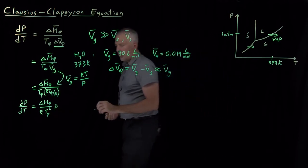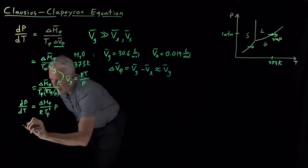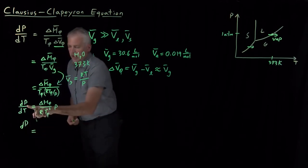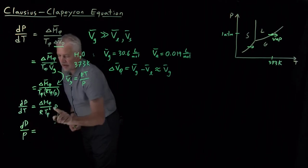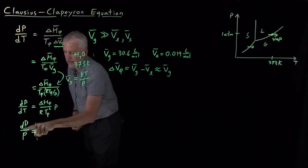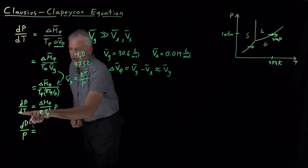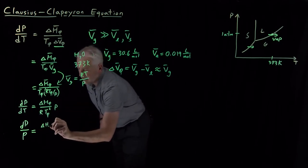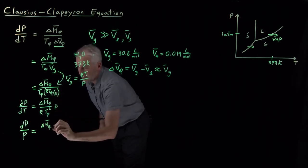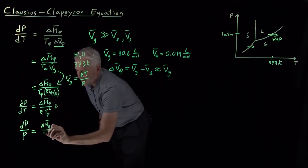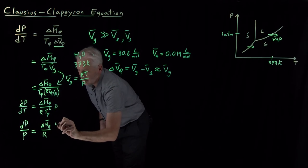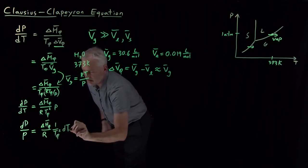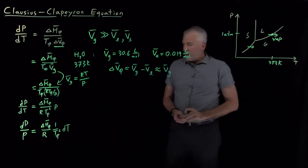But now it's in a form where we can actually rearrange it a little bit. If I bring all the things related to pressure over to the left-hand side, so I'll bring this P over to the left-hand side and write dP with a P in the denominator, and I'll bring the dT over to the right-hand side. So, that should be a molar enthalpy of vaporization. My equation now looks like this.